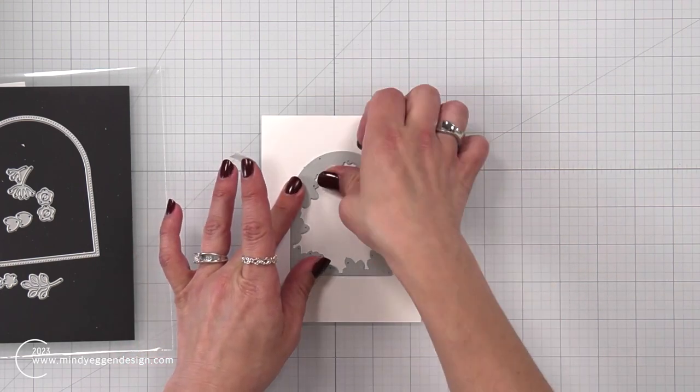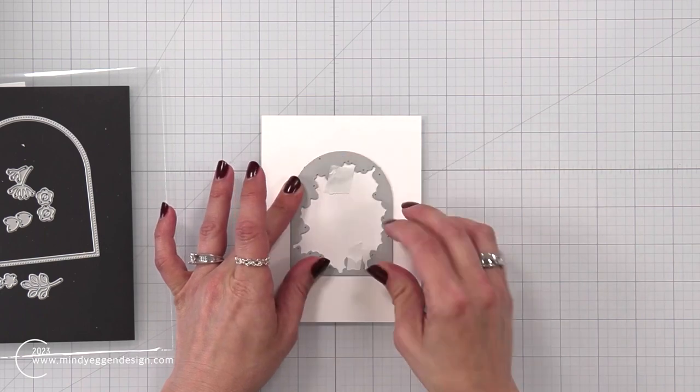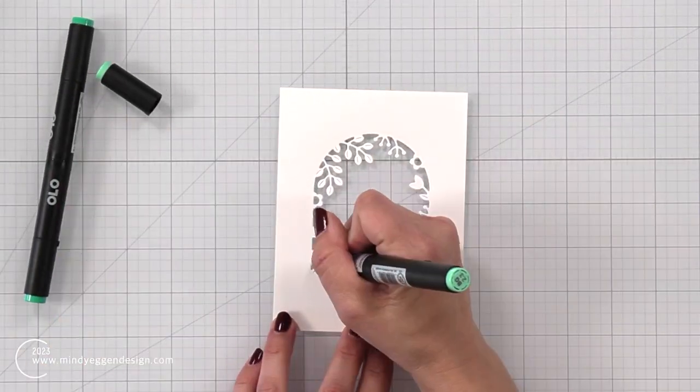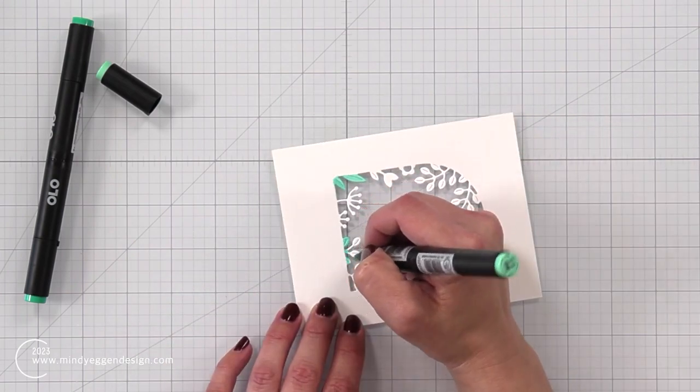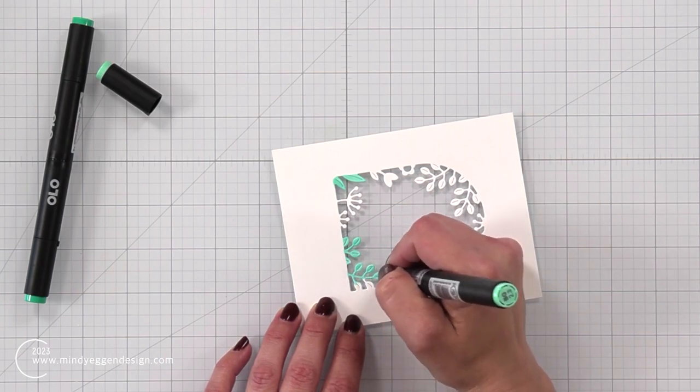So I started out by centering this on a piece of 80 pound white cardstock. I held the die in place with some post-it tape, and now I'm going to color in those images or those die cut pieces using my alcohol markers.